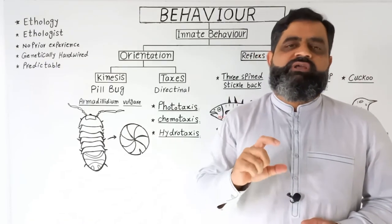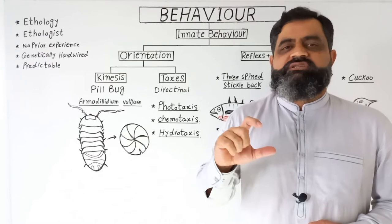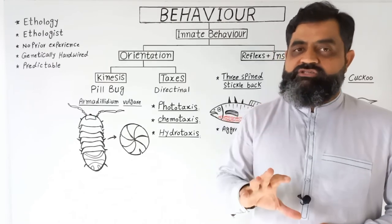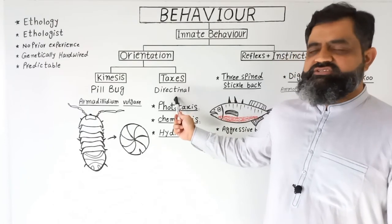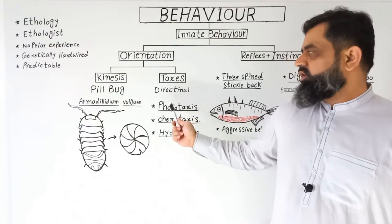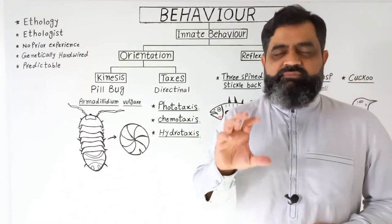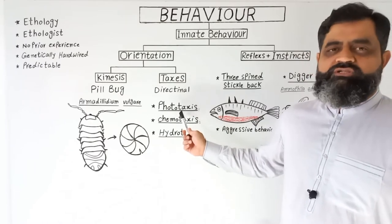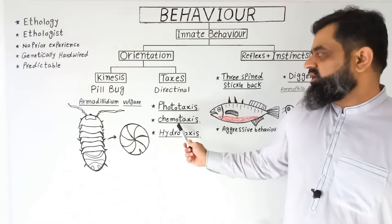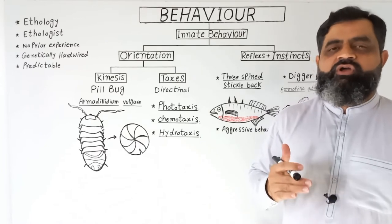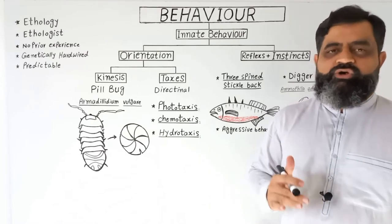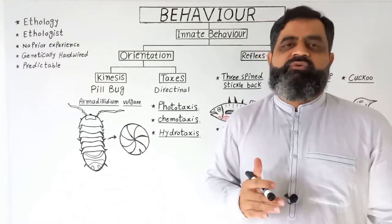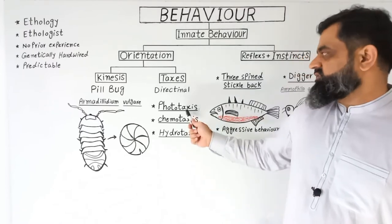The second example of orientation is taxis. Taxis is also the movement of animals, but this movement is usually towards a stimulus or away from a stimulus — it is a directional response. The best examples of taxis are: phototaxis, which is movement towards or away from light; chemotaxis, which is movement towards or away from chemicals; and hydrotaxis, which is movement towards or away from water.